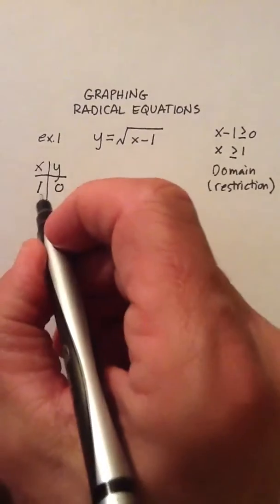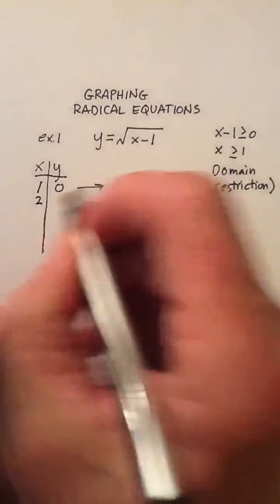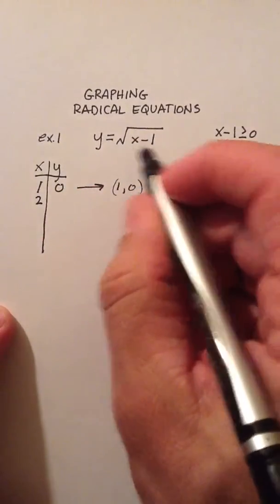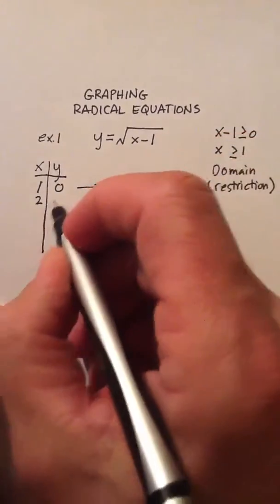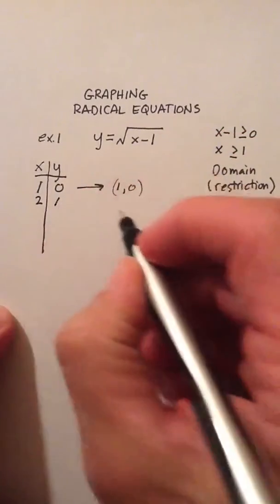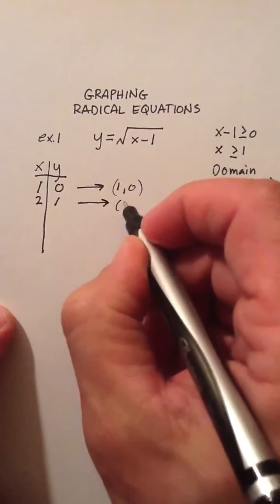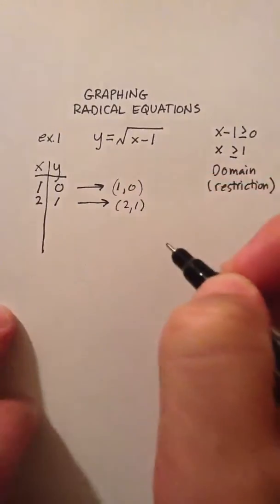I can choose 2. Let's try 2. So, 2 minus 1 is 1, and the square root of 1 is also 1. So, let's go ahead and do that. And that produces my second point. And that is 2, 1.